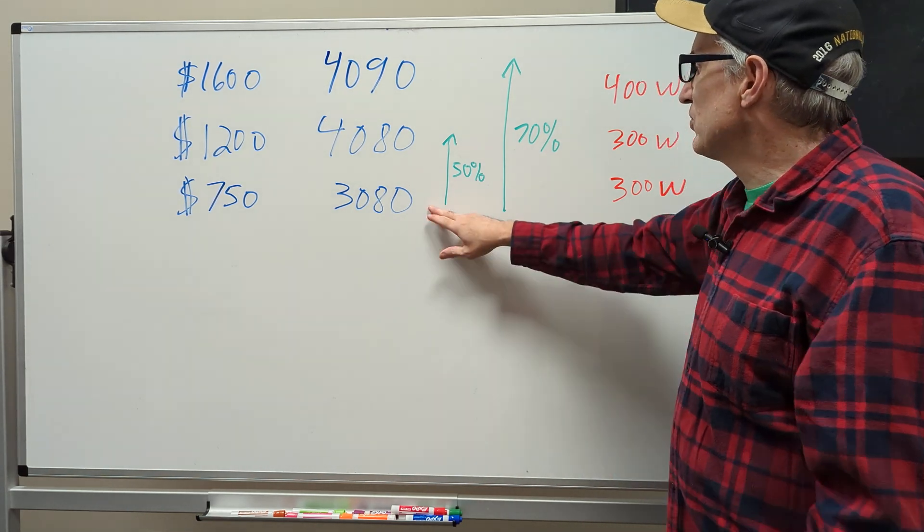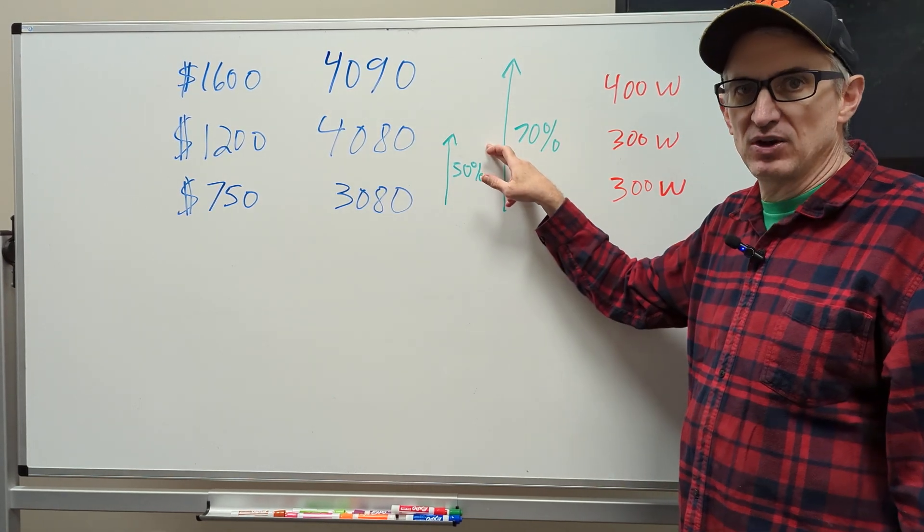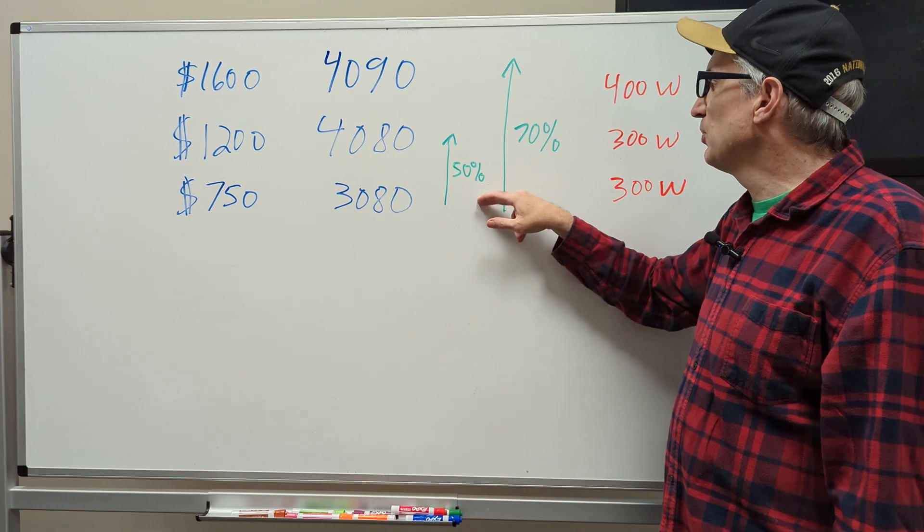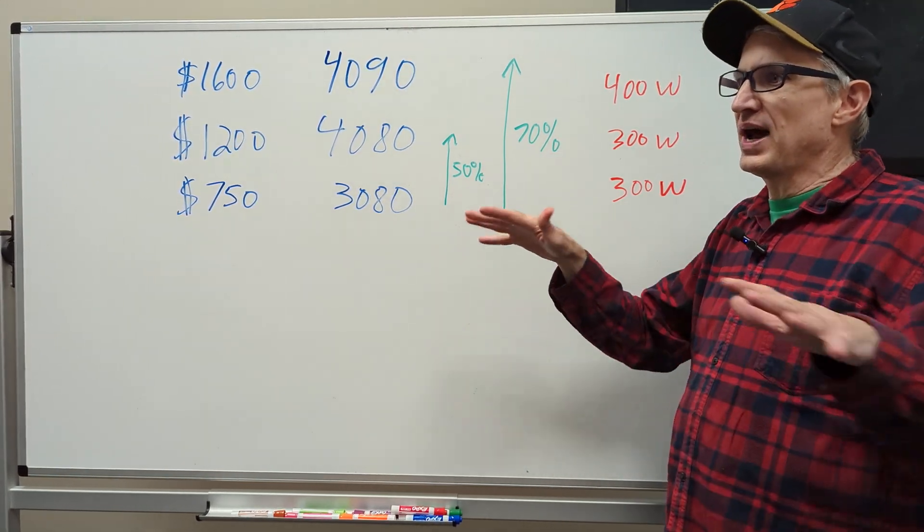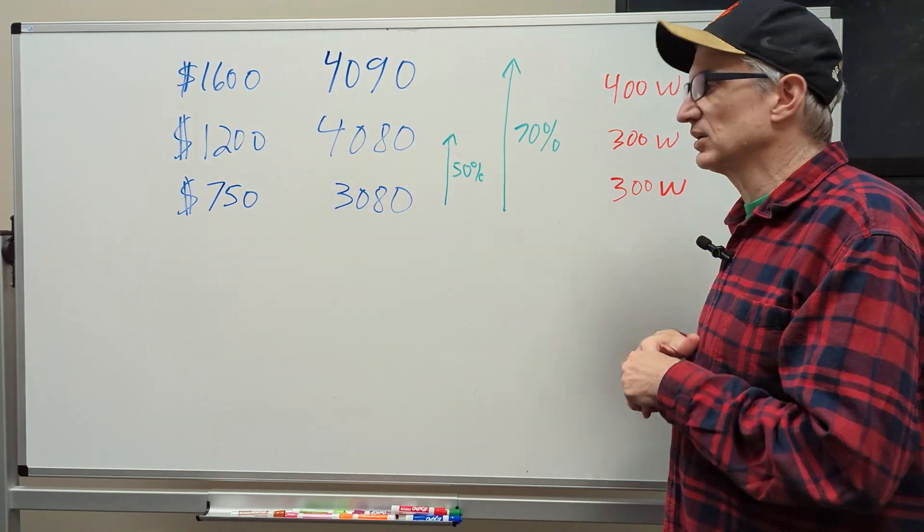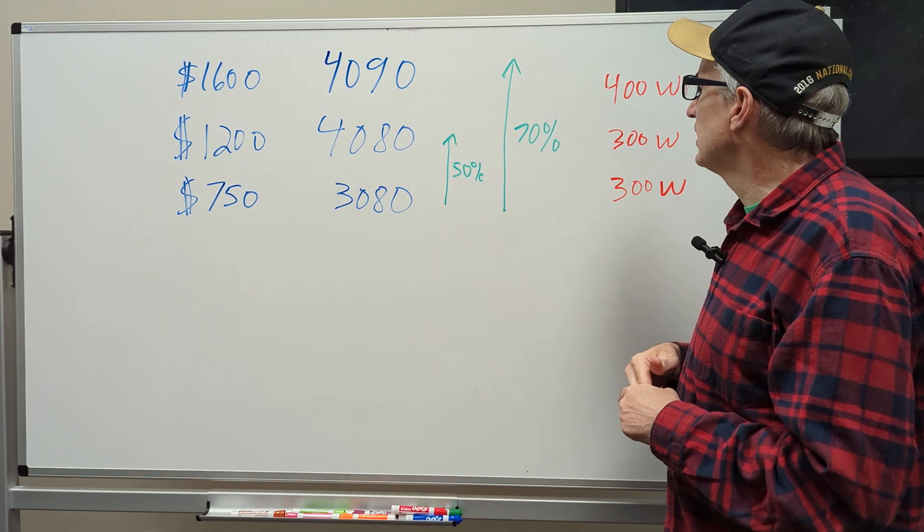So if you have a 3080 and the graphics are your bottleneck, then you can see as much as a 50% on average performance benefit. This is ish again. This is across a whole wide range of games. Not done by me, the testing. Based this on some other reviews I watched.